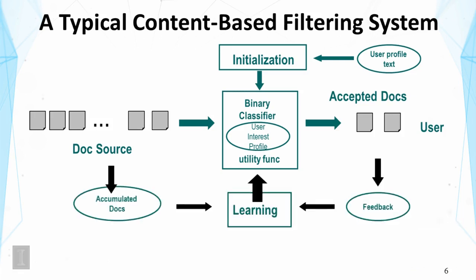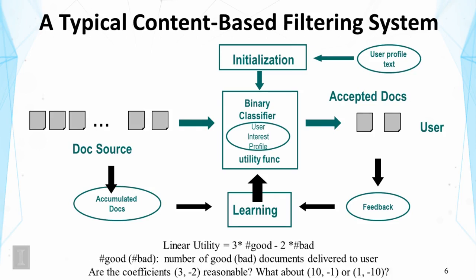There is also typically a learning module that learns from user feedback over time. Since the user's information need is stable, the system has many opportunities to observe the user. If the user views a recommended item, that signals relevance; if they discard it, it's not relevant. Such long-term feedback allows the system to collect a lot of information about the user's interest and improve the classifier.